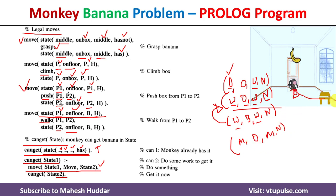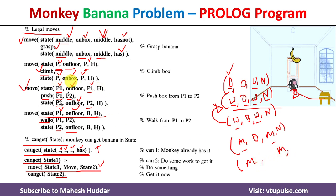The monkey is now at middle, box is at middle, but the monkey is on the floor. We have not got the banana yet, so we execute the next move. Grasp cannot be executed because the monkey must be on top of the box. Climb can be executed: monkey and box are at the same position (middle and middle) and the monkey is on the floor. After executing climb, the monkey is on the box at middle, but still has not got the banana.